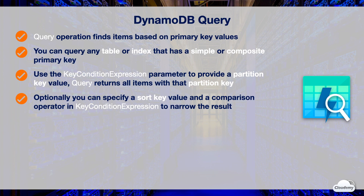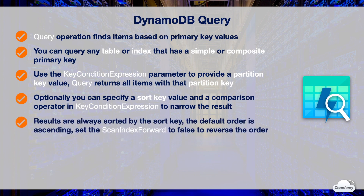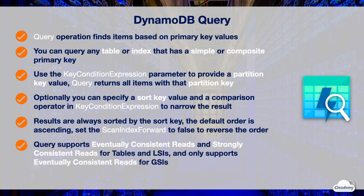You can optionally specify a sort key and a comparison operator in the key condition expression to narrow the query result. Query results are always sorted by the sort key. If the data type of the sort key is a number, the results are returned in numeric order; otherwise the results are returned in order of UTF-8 bytes. By default, the sort order is ascending. You can reverse the order by setting the scan index forward parameter to false.